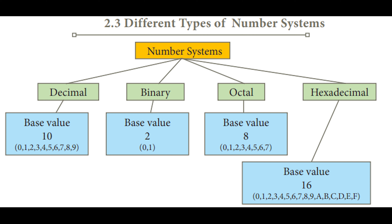Here we will be learning the number system conversions also. We saw what is decimal, binary, octal, and hexadecimal number system. In this chapter, we will be converting a decimal number to binary, a decimal number to octal, octal to binary, octal to decimal, octal to hexadecimal, and hexadecimal to octal. We will see all the conversions of this number system in this chapter.